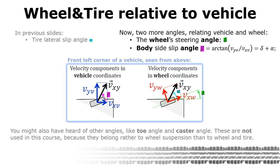Then you might have heard of other angles for vehicles such as toe angle and caster angle. They are rather measures from the suspension than for the wheel. Therefore they are deliberately excluded from this course.